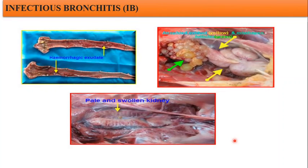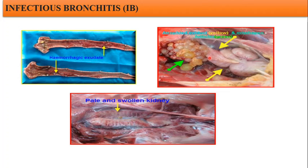Here we can see the hemorrhagic exudates, and atrophied oviducts — the oviduct is also yellow in color. Misshapen follicles can be seen with green and yellow color showing atrophied oviducts, and pale and swollen kidneys. The kidneys are clearly infected. For small birds — growers and chicks — they are highly affected and are great sufferers.